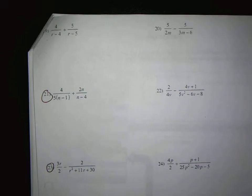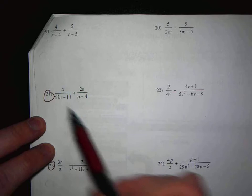Alright, so first we're going to do number 21, and it's 4 over 5(n minus 1) plus 2n over (n minus 4).